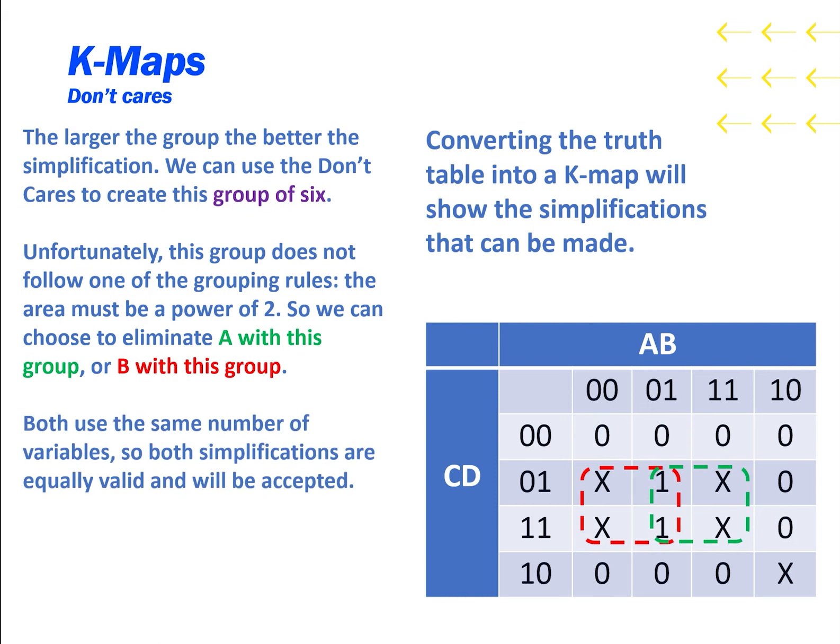Both use the same number of variables, so the simplifications are equally valid and both will be accepted. Meaning a reduced function is either B and D, or A' and D.